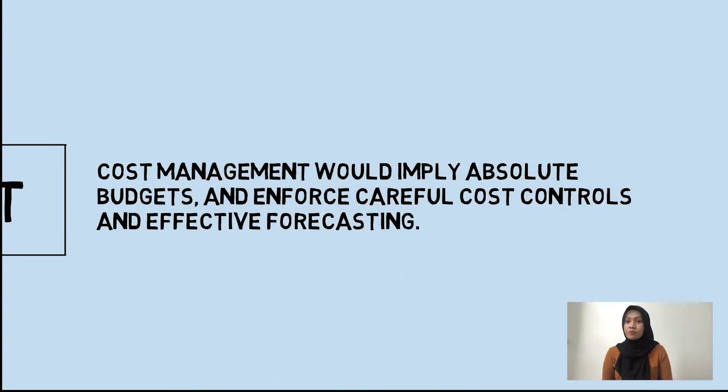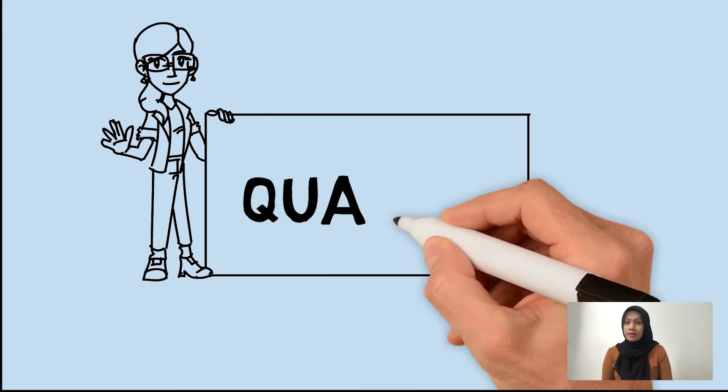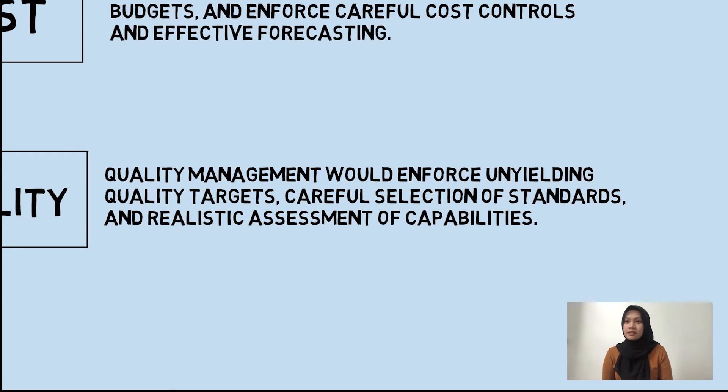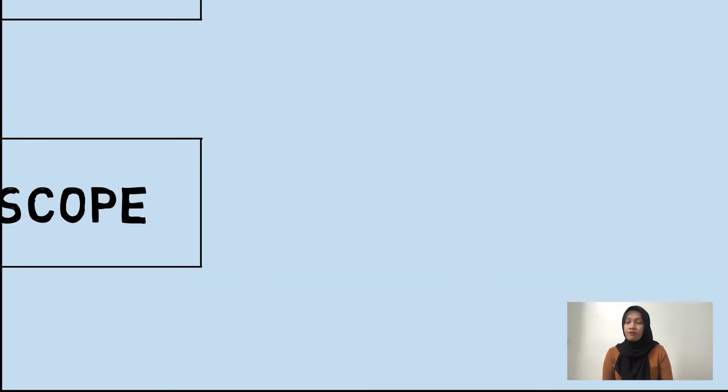Cost management implies absolute budget, enforces careful cost controls and effective forecasting. Quality management enforces unyielding quality targets, careful selection of standards, and realistic assessment of capabilities.